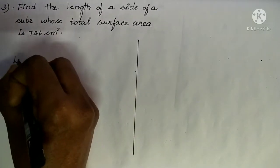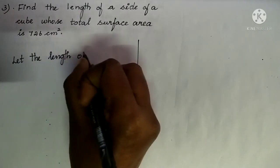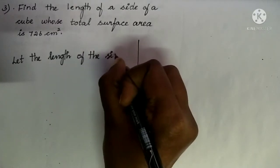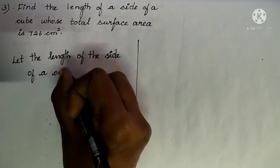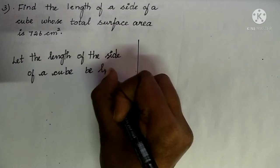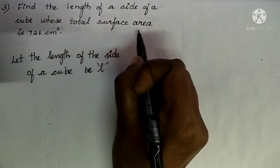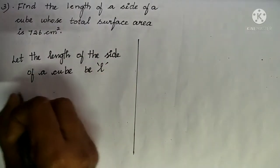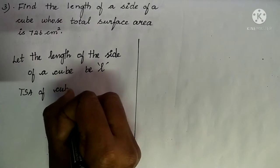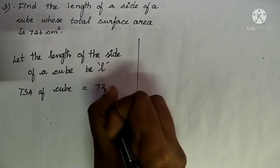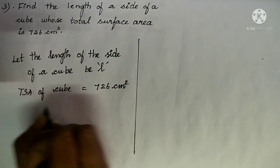We will let the length of the side of a cube be L. We are going to find L only in this question. It is also given that the total surface area (TSA) of the cube is equal to 726 cm². We already know the TSA of a cube is 6L².